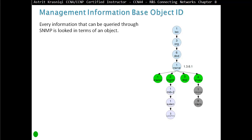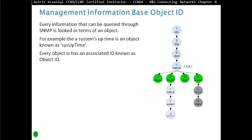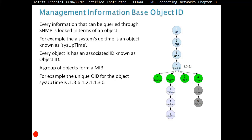Management Information Base Object IDs: every piece of information that can be queried through SNMP is stored as an object. For example, the system uptime is an object known as sysUptime. Every object has an associated ID, and a group of objects forms a Management Information Base. The unique OID for sysUptime is 1.3.6.1 and so on — you can see it on the right. If you query the system uptime of a device such as a router or switch, you get a long numeric string like .1.3.6.1 that doesn't make sense on its own. SNMP provides raw information, so you still need another application to compile and decode these messages into a format you can understand.